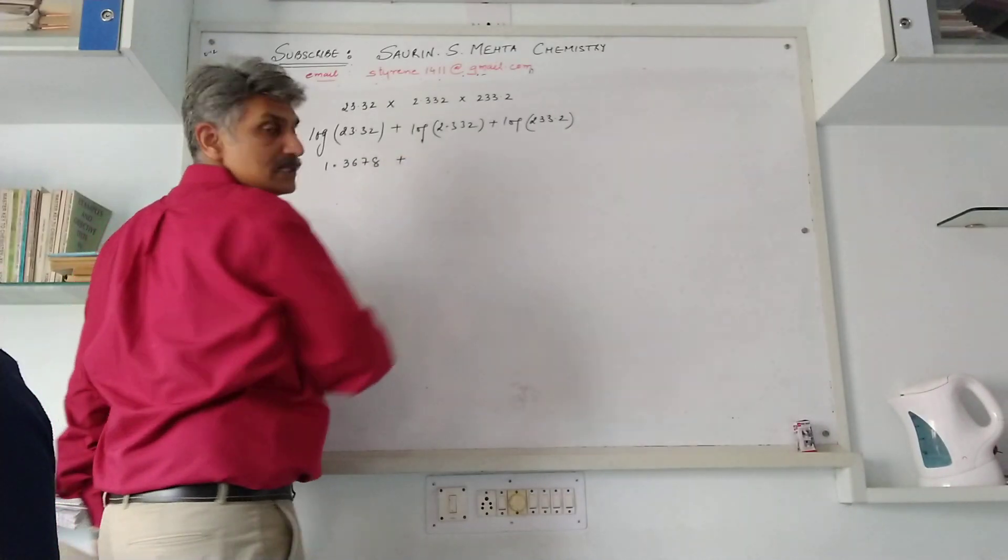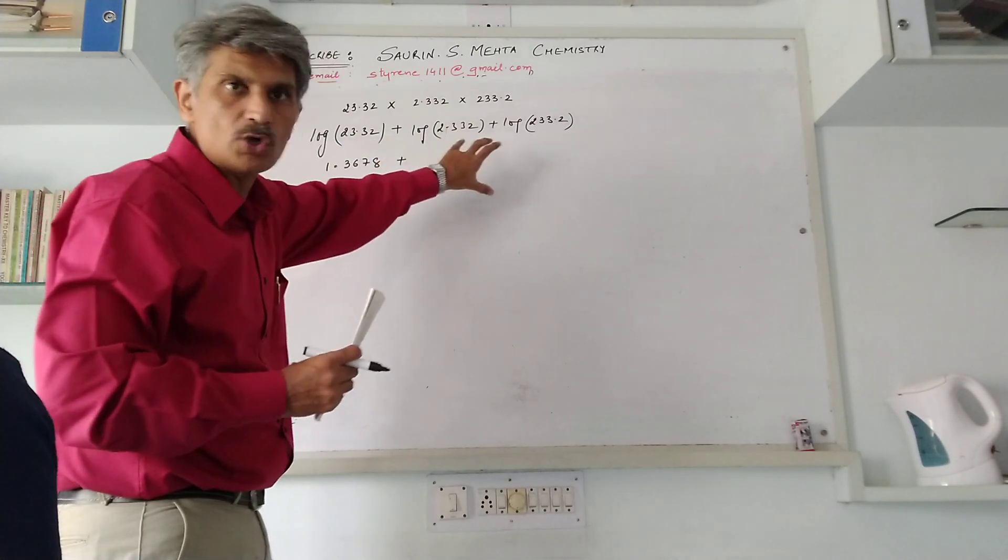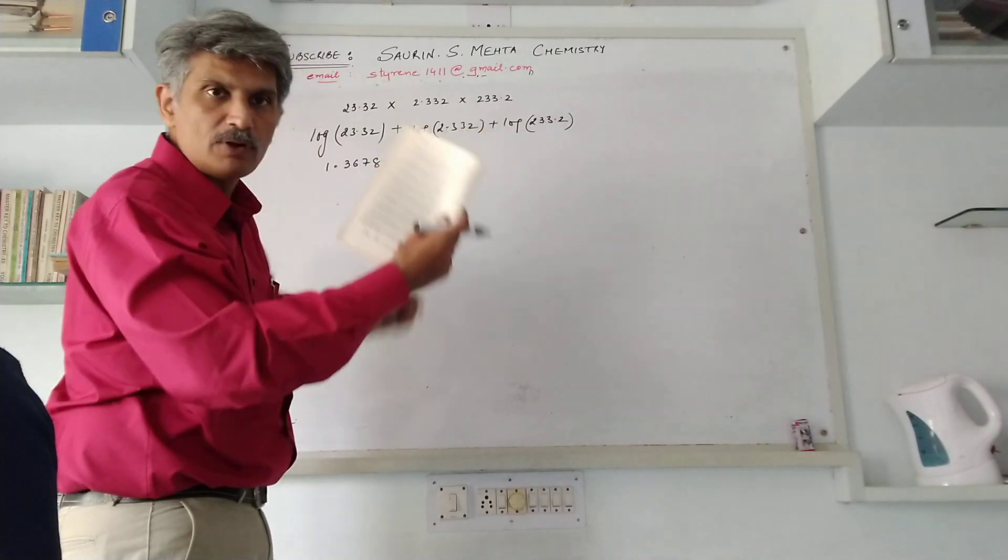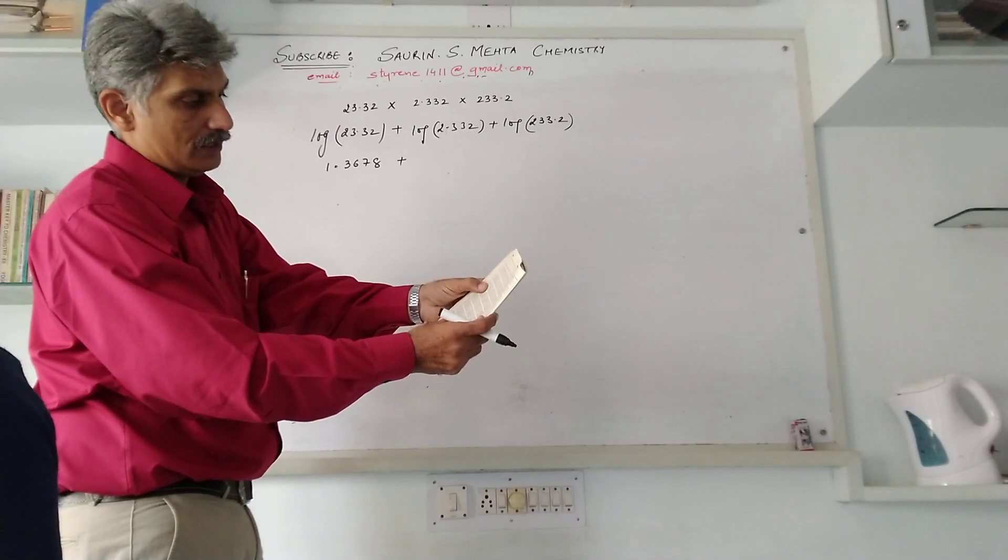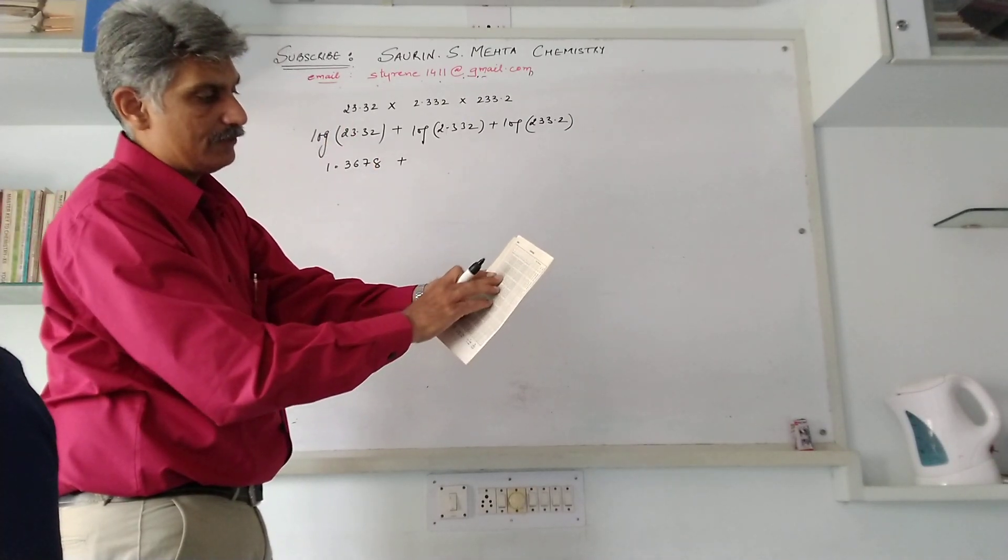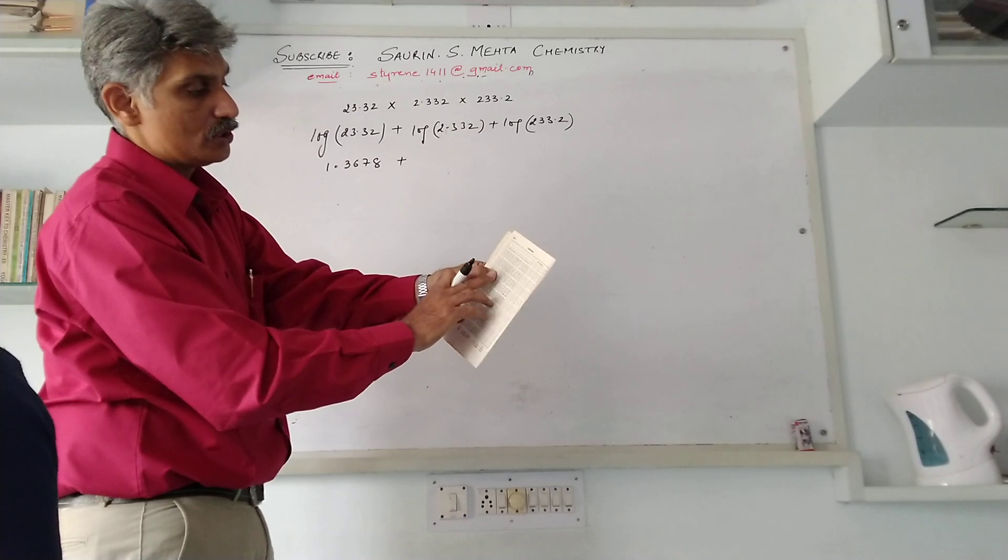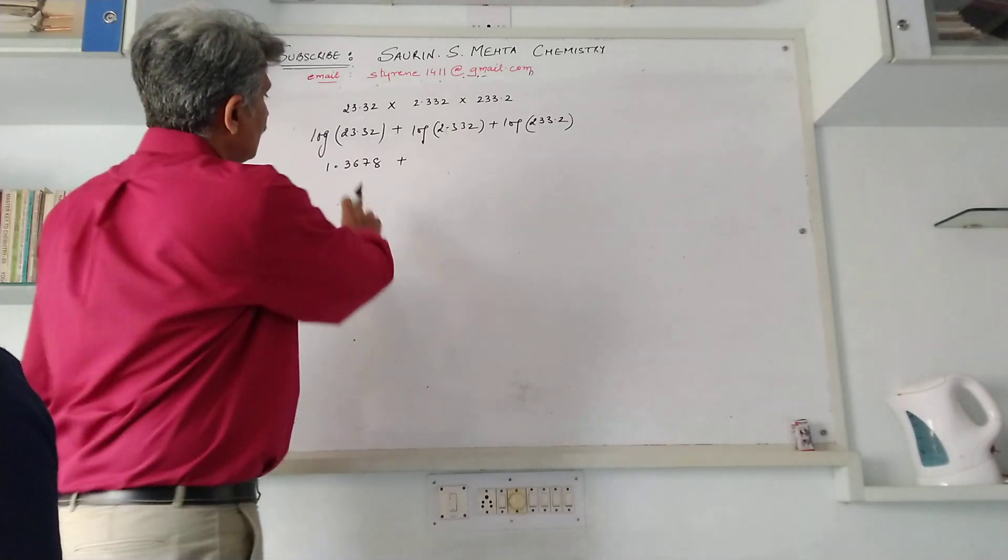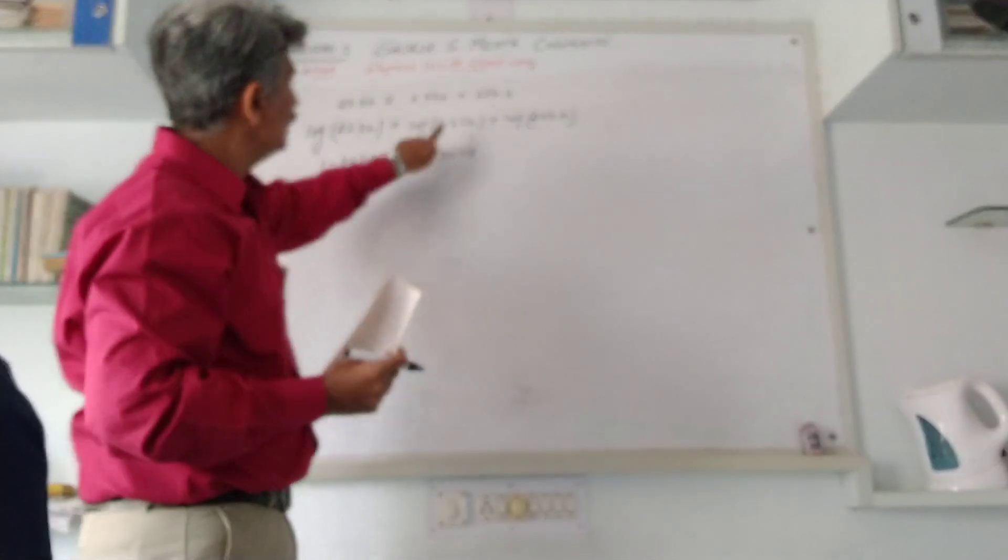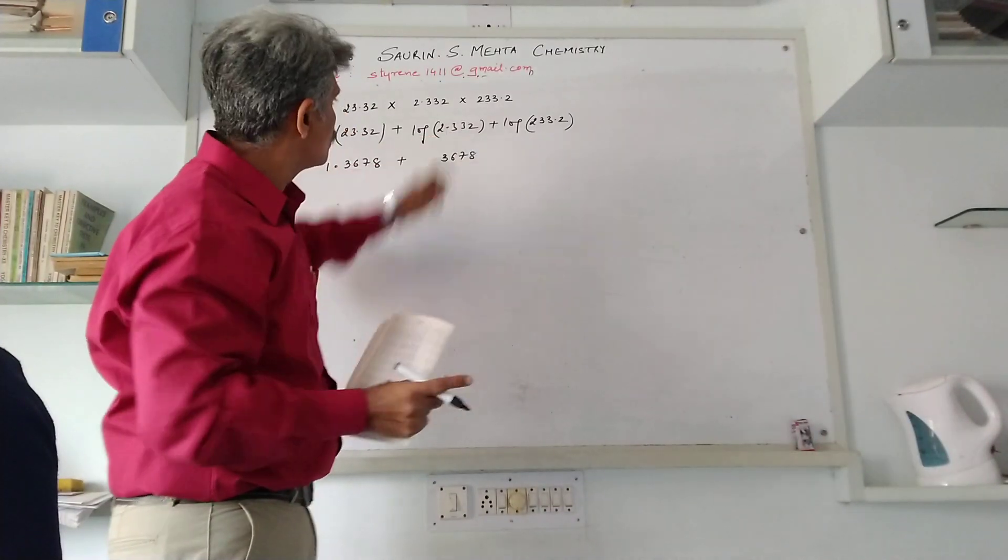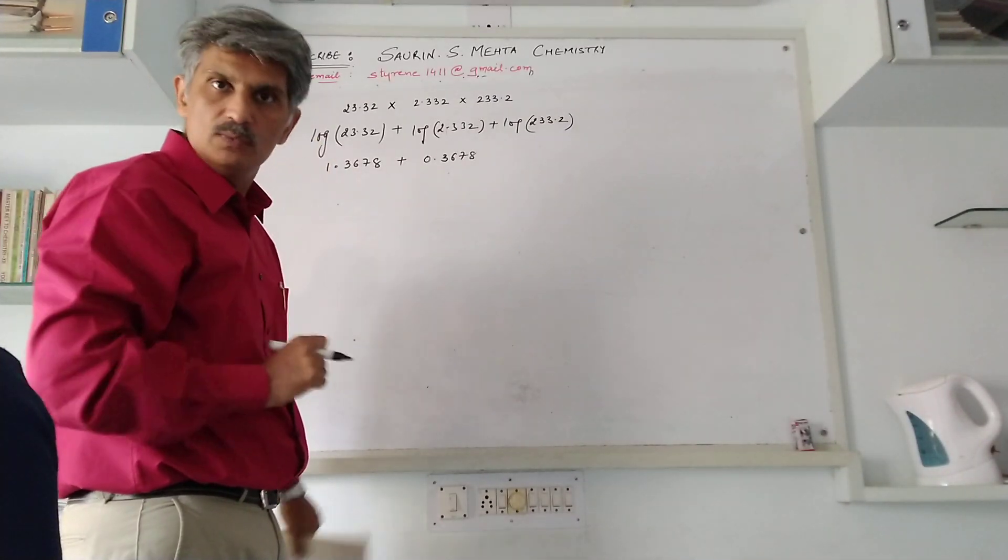There is a plus sign, so I'll place a plus sign. It is 2.332. From the log table, we go through the value 2.3. For that there is a difference of 3. For 3 the value is 3674, and the mean difference 2 has the value 4. So we'll add that 4, and it comes to 3678. Now before the decimal there is only one digit, so I'll write 1 minus 1 equals 0.